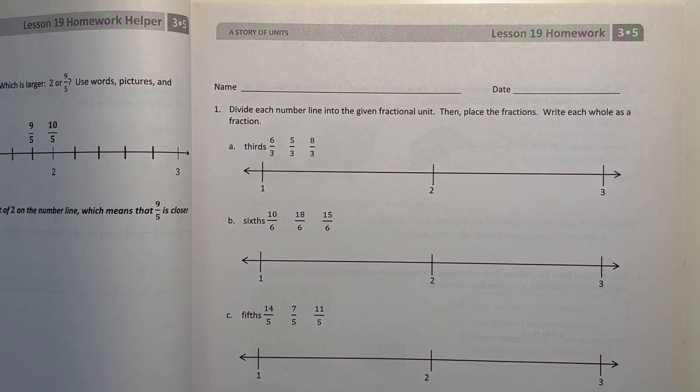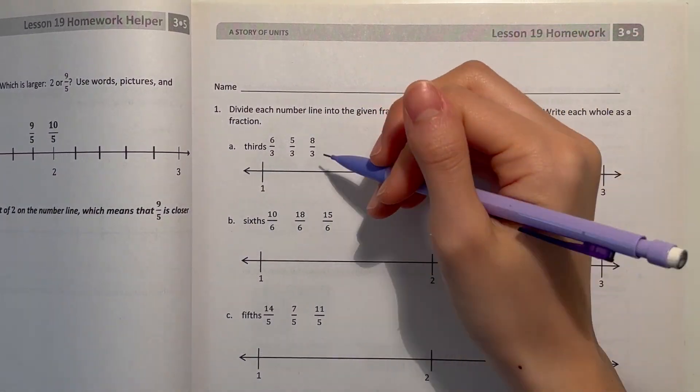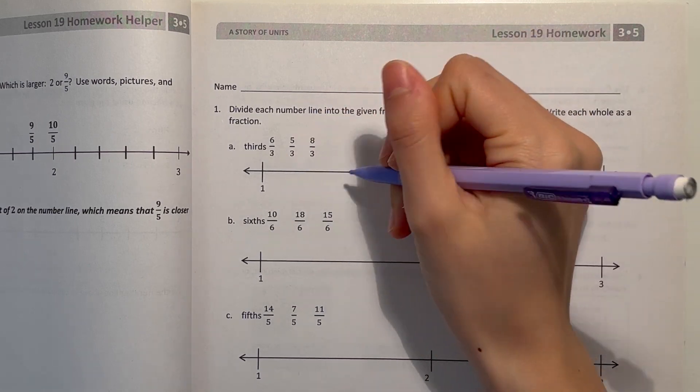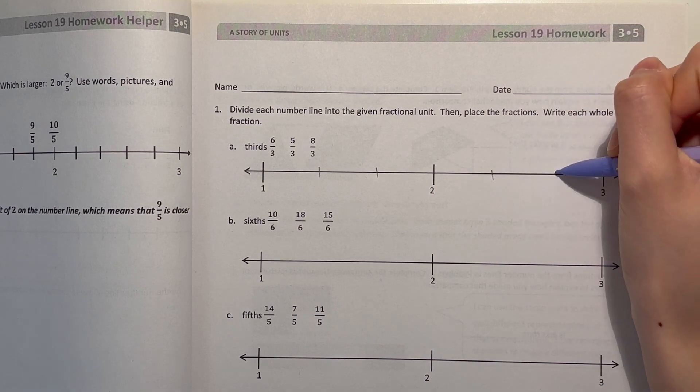Number 1, divide each number line into the given fractional unit. Then place the fractions, write each whole as a fraction. So A, we have thirds. That means between each whole we need to separate that section into thirds. So 1 and 2 separate into thirds, and 2 to 3 separate into thirds.